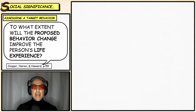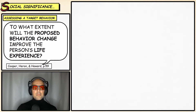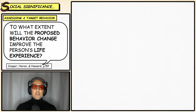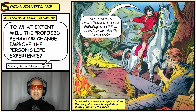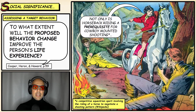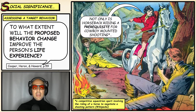Another question we ask when assessing the social significance of a potential target behavior is whether that behavior is a necessary prerequisite for a useful skill. Skills are useful in certain environments but are built upon prerequisite skills. For example, if you want to do cowboy mounted shooting, you need to know how to horseback ride first — that is a prerequisite. So if a skill can be identified that has prerequisites the individual does not currently have, those prerequisites can become significant target behaviors for change.